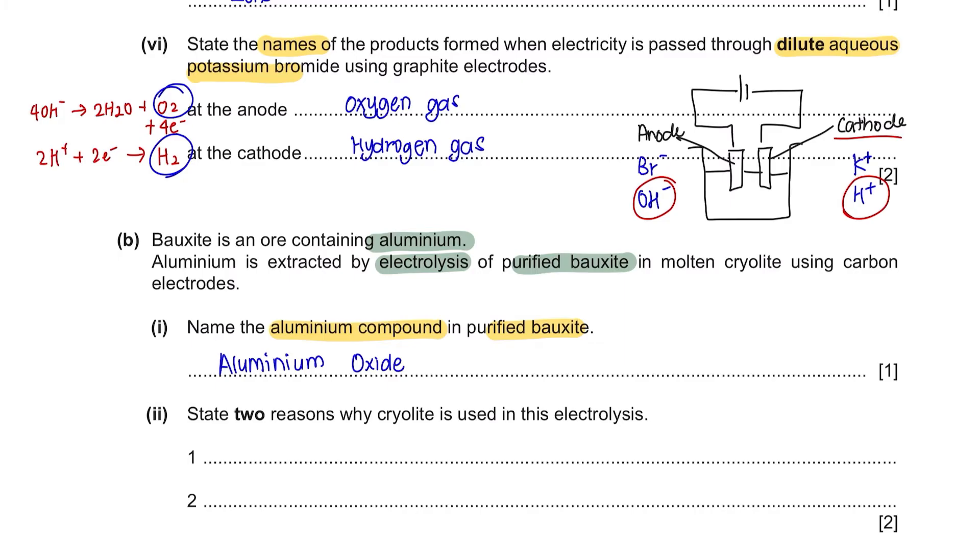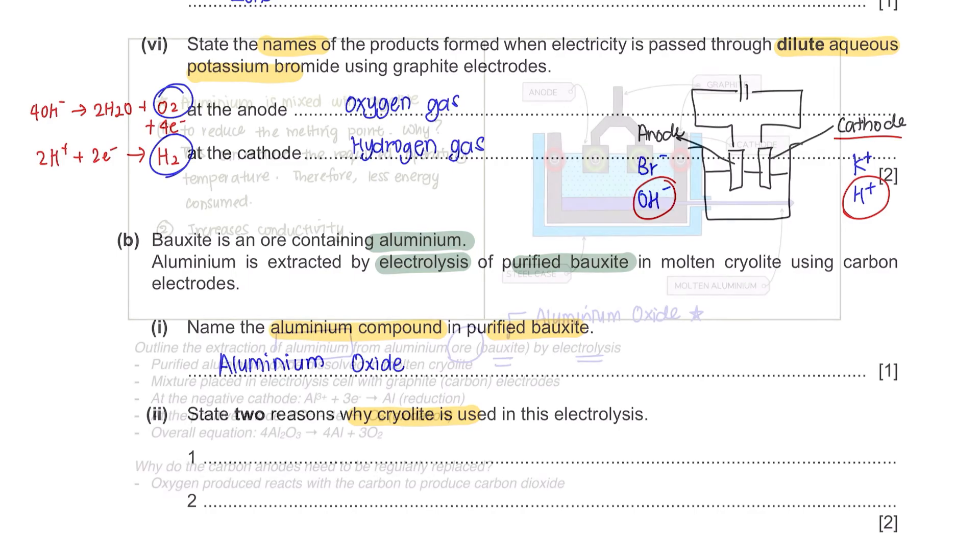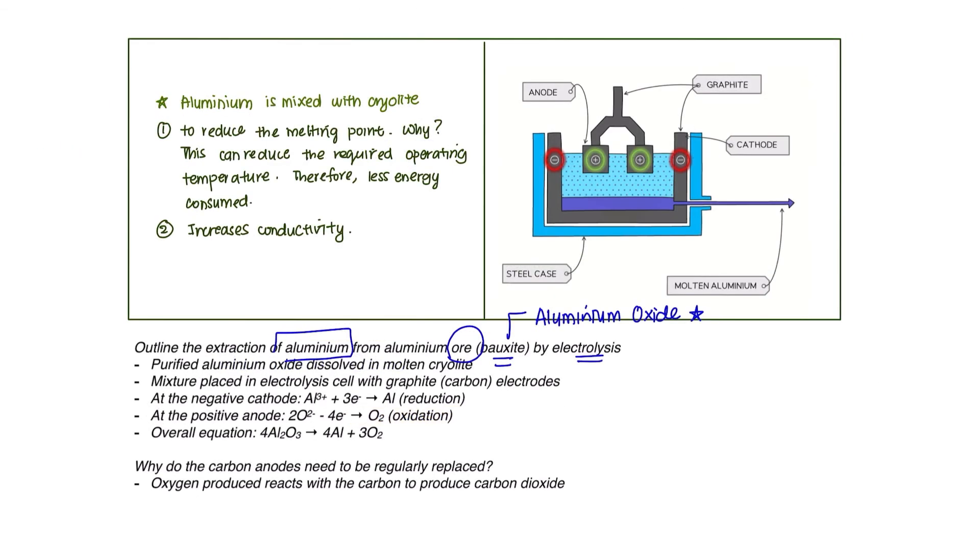Part 2. State two reasons why cryolite is used in this electrolysis. During the extraction of aluminium from bauxite, aluminium is mixed with cryolite. There are two reasons for this. The first one is to reduce its melting point, and the second reason is to increase its conductivity.